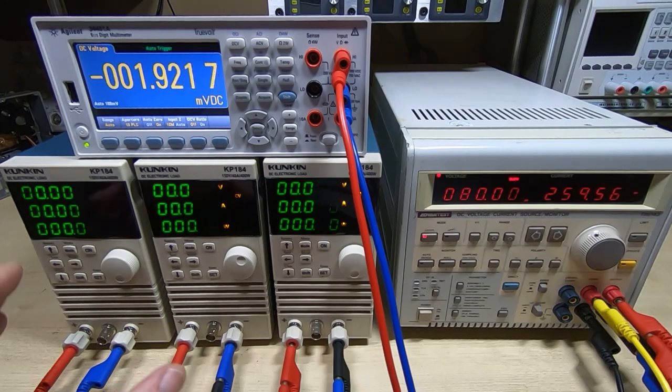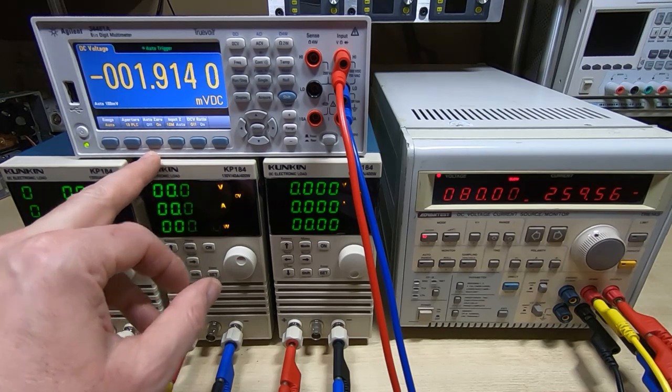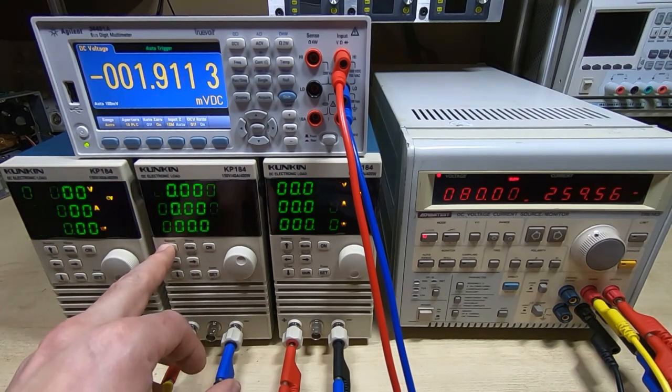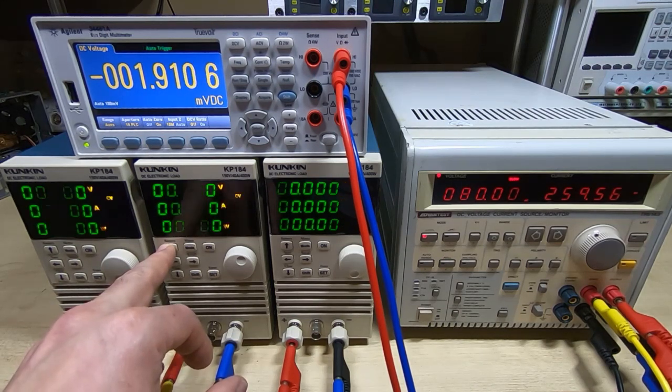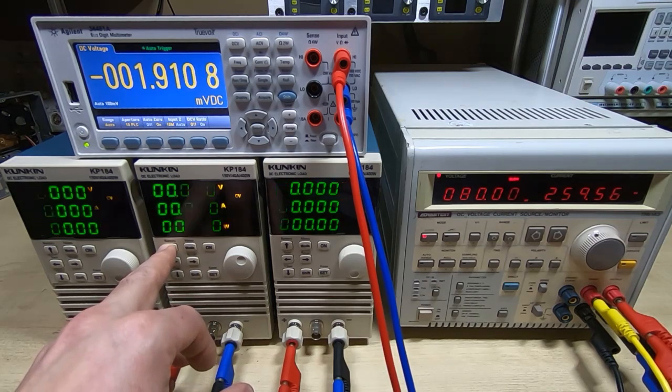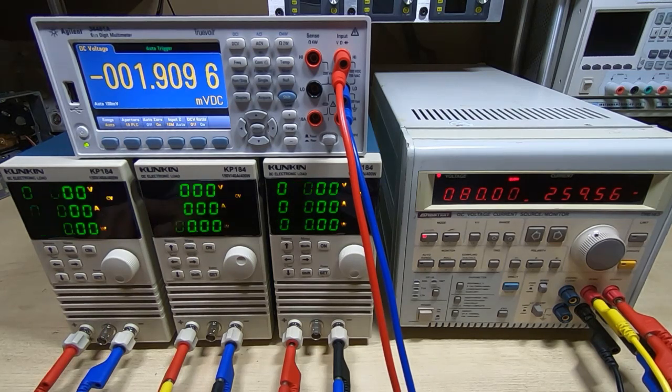To get these KP184s into calibration mode, power them off, press and hold the up arrow key and then power them back on. After a few seconds you should see a message on the Kunkin screen that says CUV1, and that's the first voltage calibration point.